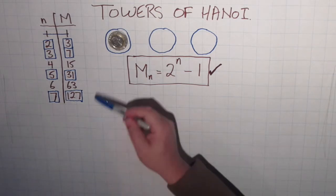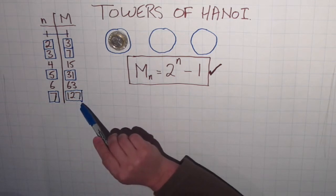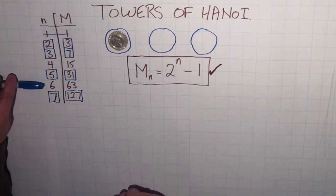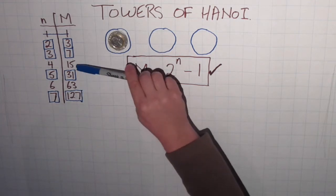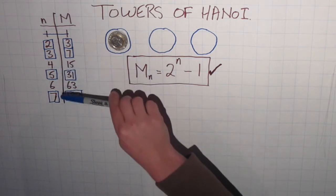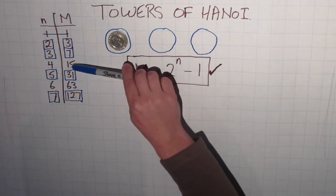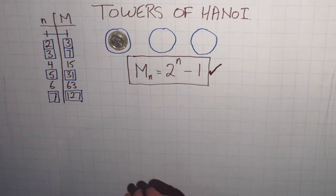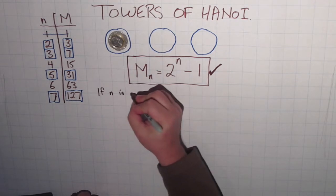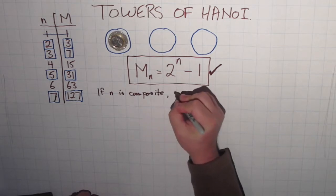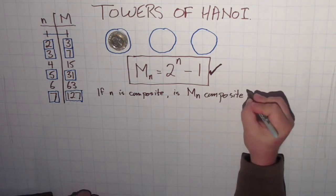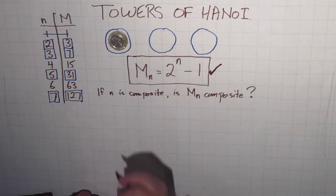There are actually two complementary questions at the same time here. One is that if n is prime, then M_n is prime. But the other one is its inverse statement: if n is composite, then M_n is composite. Because that seems to be happening at the same time too. Does every time n turns out to be a composite number—a positive integer that's not prime, more than one—does the number of moves come out to be composite as well? I want to start by exploring that inverse question.